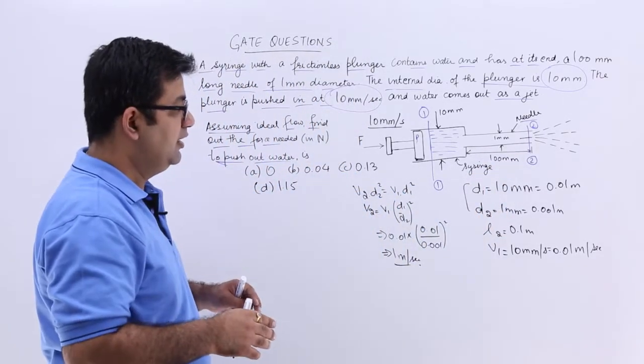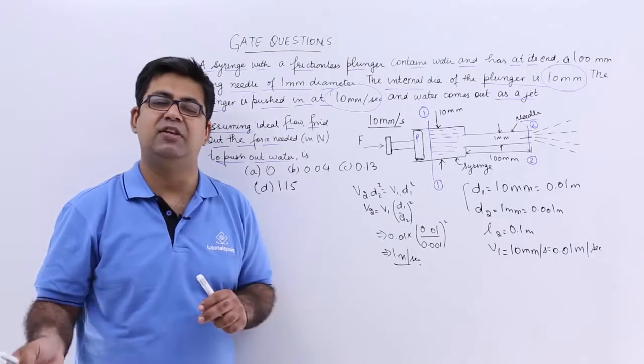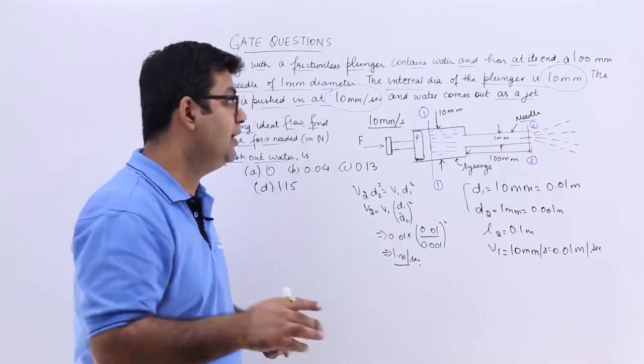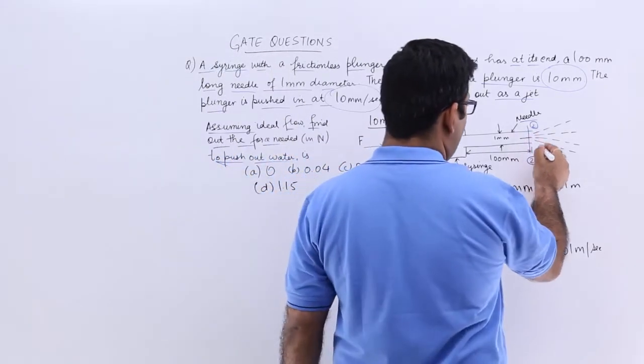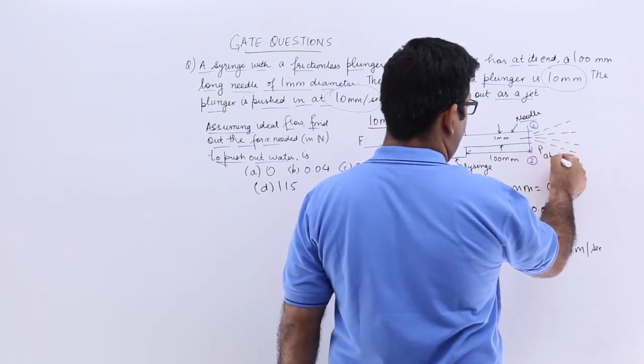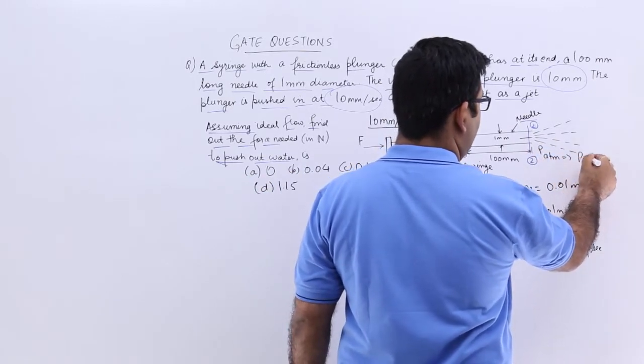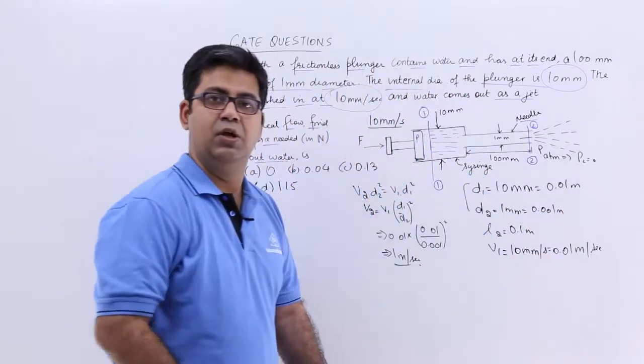Now we do not know the pressures at either 1 or 2. But we can say that at section 2 we can assume that the pressure is atmospheric. So I can say P2 can be 0.